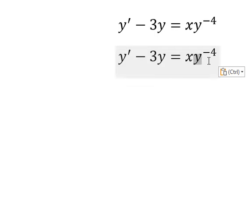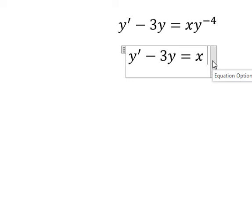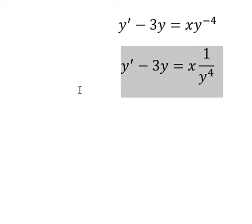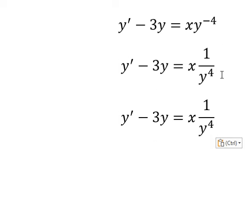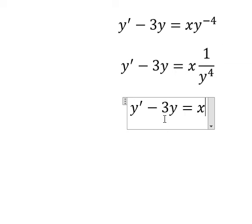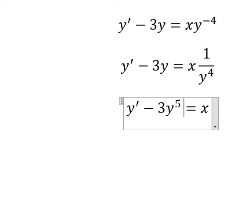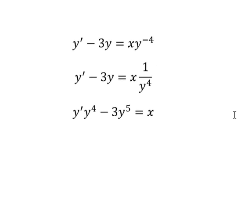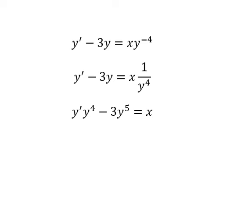About this one, I can put it into 1 over y to the power of 4. Next, we multiply both sides by y to the power of 4. So we have y to the power of 5, and the differential of y with y to the power of 4. This is about Bernoulli's equation.